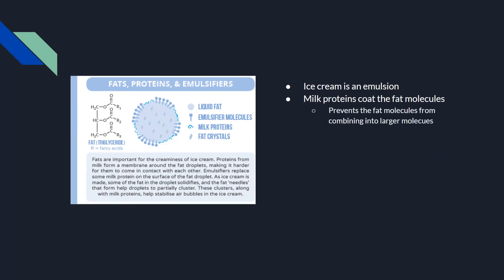This is caused by milk proteins coating the fat molecules — the fat molecules get surrounded by protein molecules, which prevents the fat from forming into larger clusters while also helping it mix with the water. For most commercial ice creams, emulsifiers are also added. These contain two components: one side that is water-soluble and one side that is fat-soluble. These emulsifiers help the milk proteins combine and provide a thin membrane surrounding the droplets, making them less likely to cluster when air is added.